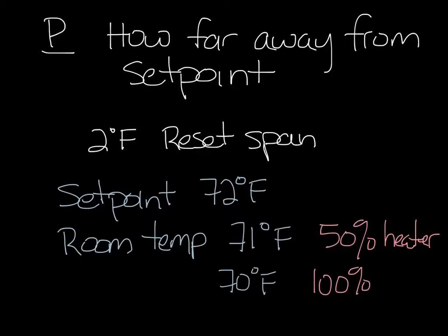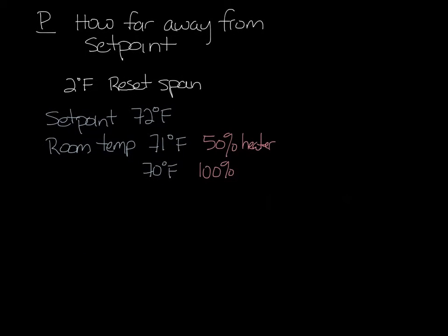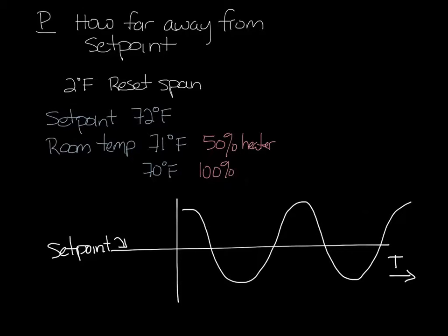Proportional control is used by pneumatic, electric, and analog electronic control products. Proportional control looks something like this, where time is going this way, and your setpoint is this line. Over time, the controller is going to drive to meet setpoint, but it's going to overshoot setpoint, because it's only looking at how far away you are from setpoint at any given time.